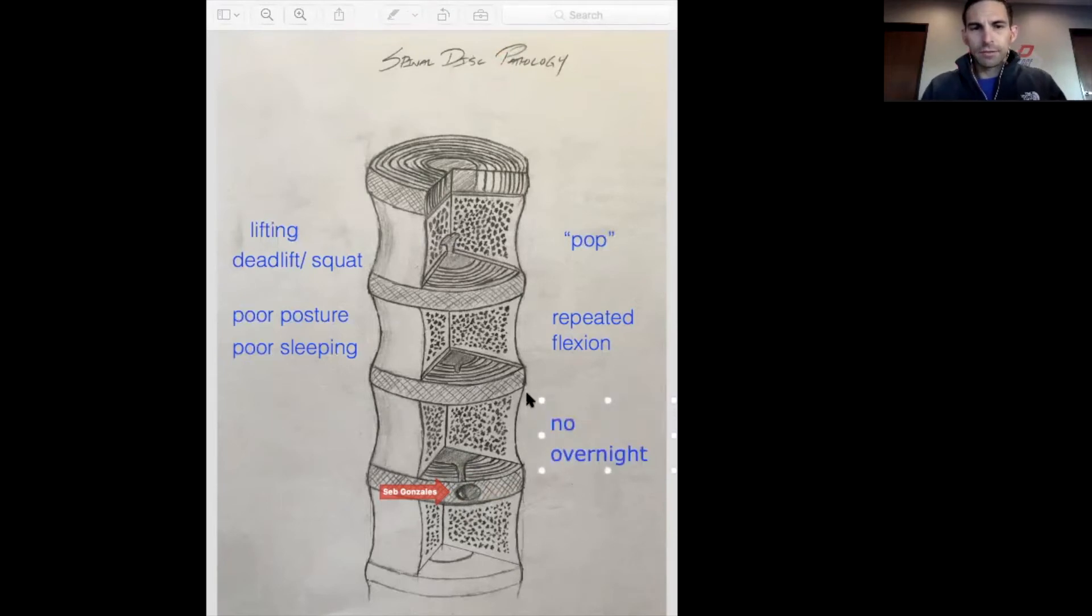I actually had a friend whose dad said he had a, so the MRI showed like a 15 millimeter herniation. I was like, how'd it happen? He's like, well, I just woke up with it. You don't really just wake up with these things. Typically, it starts as one of these, and it just becomes one of these over time.